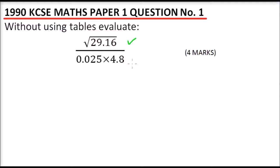We are supposed to get the square root. You look at that number 29.16. It is more than the square root of 25 and less than the square root of 36. That is between 5 and 6.